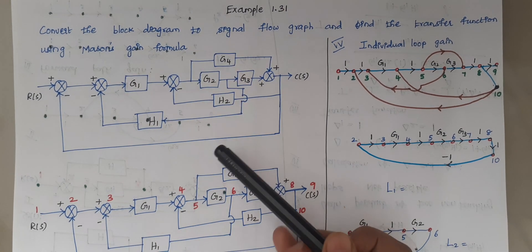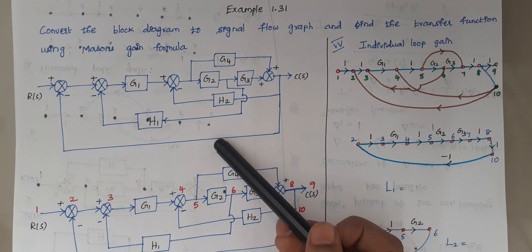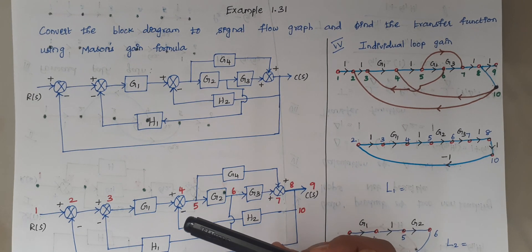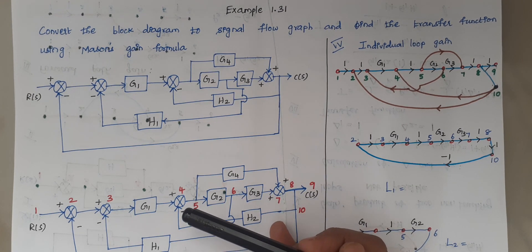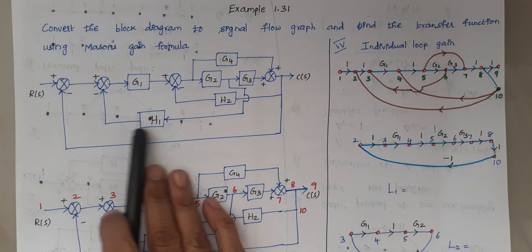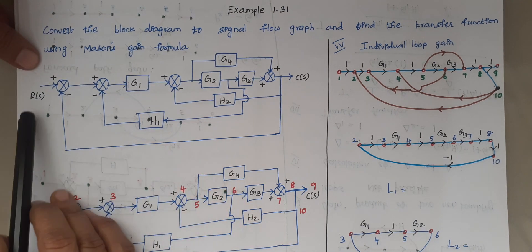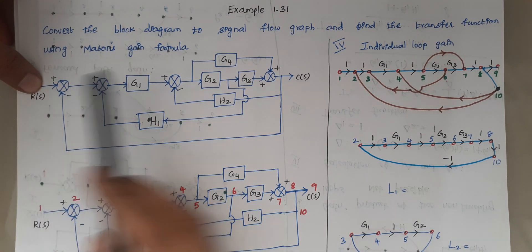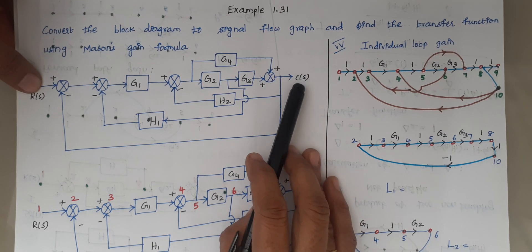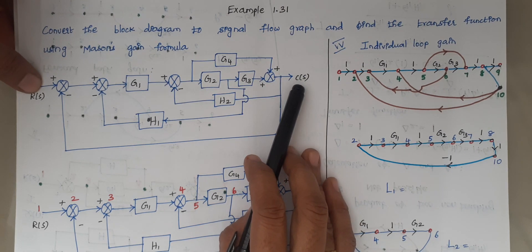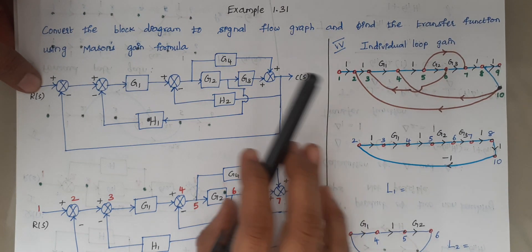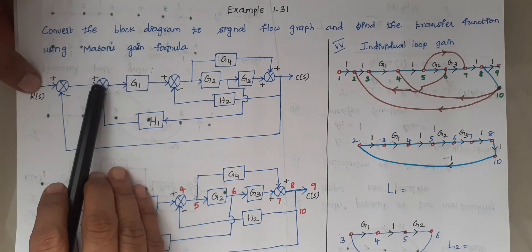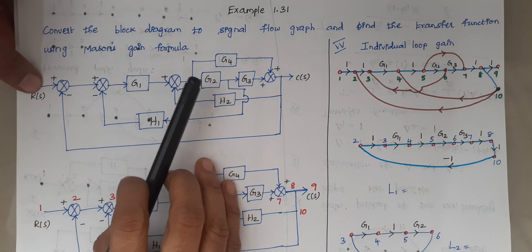So this is our given block diagram. We have to convert this block diagram to a signal flow graph. The basic step is you have to consider your input R(S) as one node, output C(S) as another node, and apart from that you have to take each and every summing point and branch point as nodes.